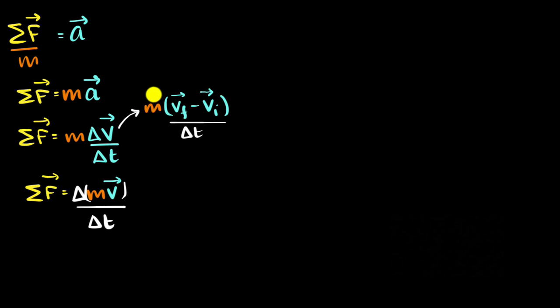Now, I can just multiply this inside. So this becomes mass times final velocity minus mass times initial velocity divided by the change in time or the time taken for that change, right? And that's exactly what this is. So notice this now represents change in mv, right?